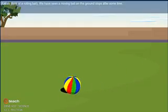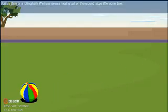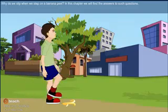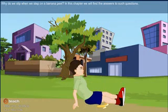Let us think of a rolling ball. We have seen a moving ball on the ground stops after some time. Why do we slip when we step on a banana peel? In this chapter, we will find the answers to such questions.